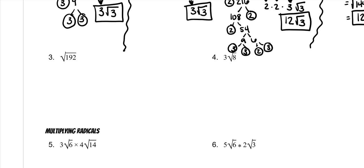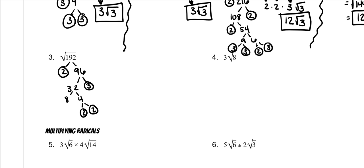For 192, again I'm not sure what goes into it, but I know it's even — so 96 goes into that. I know that 3 will go into 96, so 3 goes in with 32 left over. Well, 32 is 8 times 4. 4 is 2 times 2. 8 is 2 times 4. And then 4 is 2 times 2.